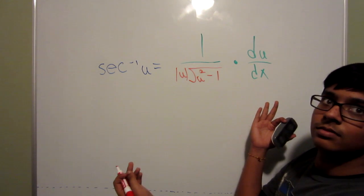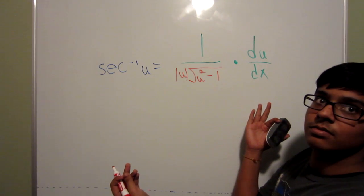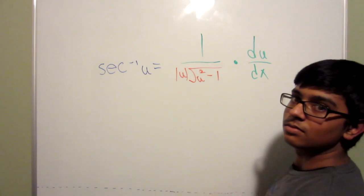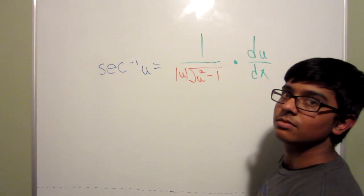No other derivative for the inverse of trig functions will have an absolute value on the bottom, except secant and another one that we will get to right now.